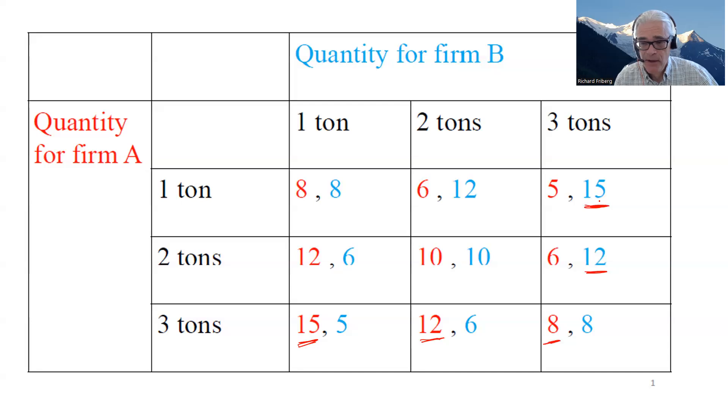If A produces two tons, we've already solved for that. Now, if A were to produce three tons, well, B would be comparing the payoffs 5, 6, and 8.